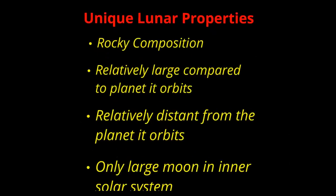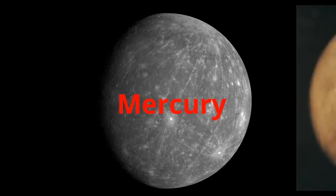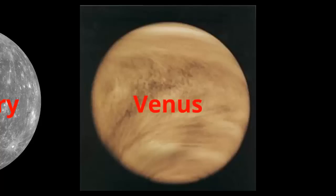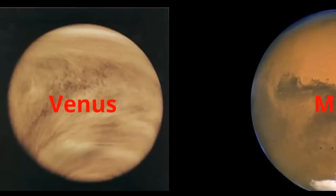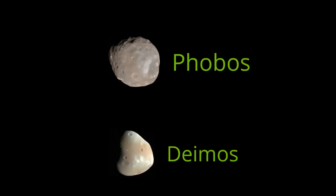The last thing that makes it relatively unique is that of the four inner planets, we are the only ones that have a large moon. Mercury looks kind of like the moon — it's got no atmosphere, it's got a lot of craters — and it does not have any moons. Venus is large like the Earth and has an atmosphere like the Earth, but it doesn't have a moon. Mars is the other planet in the inner solar system. Mars does have two moons, Phobos and Deimos, but we think these are just captured asteroids.